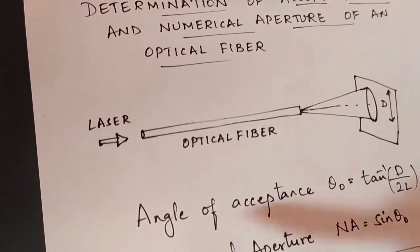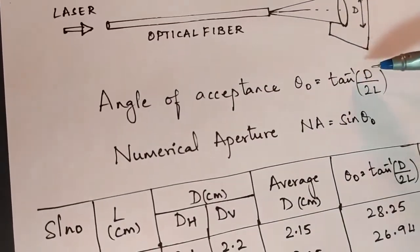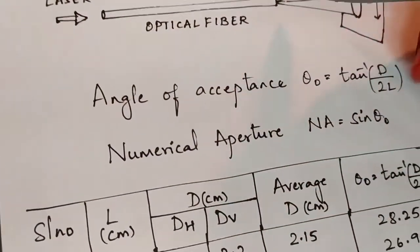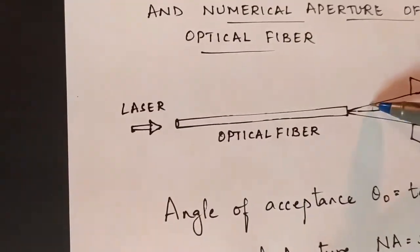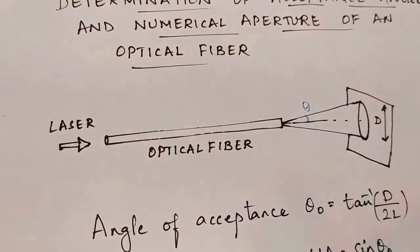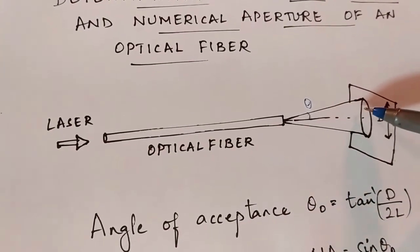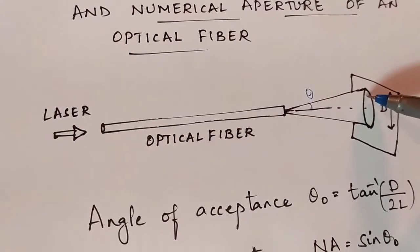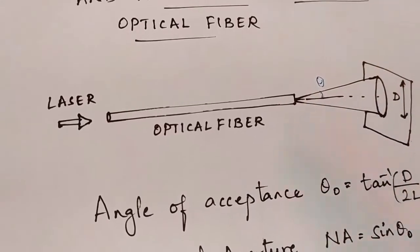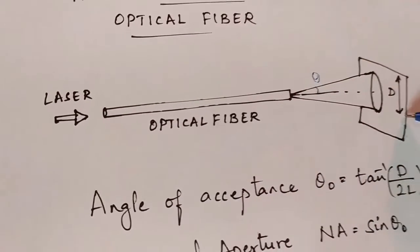The acceptance angle is calculated by the formula tan inverse of d by 2L. As you can see in the diagram, theta is the half angle of the cone, and theta equals tan inverse of d/2 divided by L, where L is the distance between the optical fiber and the screen.